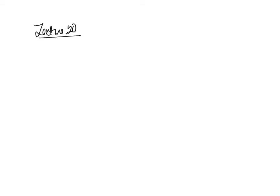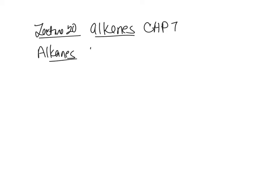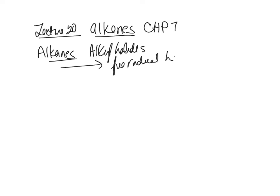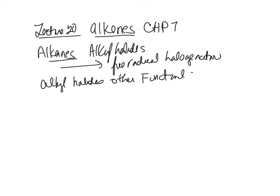Welcome to lecture 20, which is going to talk about alkenes — we are in chapter 7. We've talked about alkanes as our main functional group, we've talked about alkyl halides, and we made alkyl halides using free radical halogenation. Then in chapter 6 we talked about how to convert alkyl halides to other functional groups by what we call nucleophilic substitution.